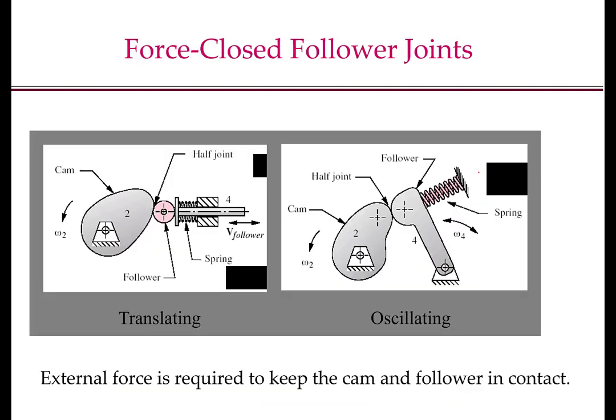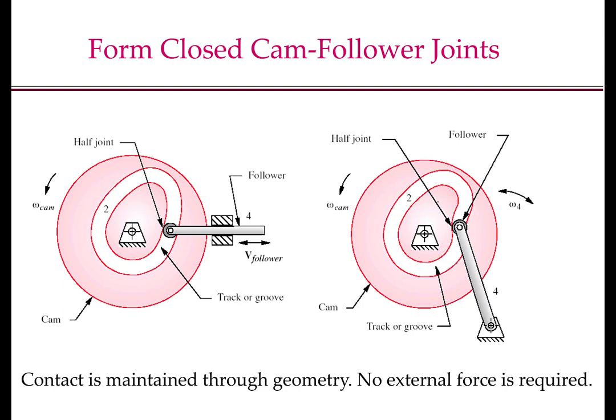In force closed followers, the contact between the cam and the follower is maintained by some external force. It may be either gravity or spring loading as shown in these pictures here. Whereas in form closed followers, the contact is maintained through the geometry of the cam. In this picture here, as well as in the axial cam picture that we had seen earlier, there is no external loading required to keep the contact of the follower and the cam profile. The grooves in the cam mechanism allow the contact to be maintained.